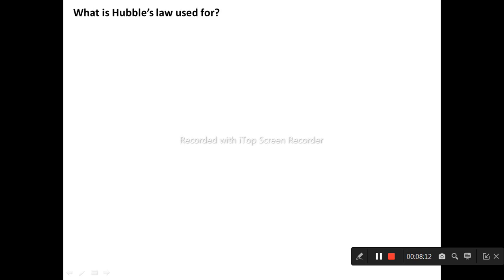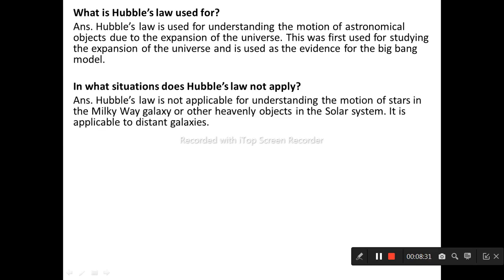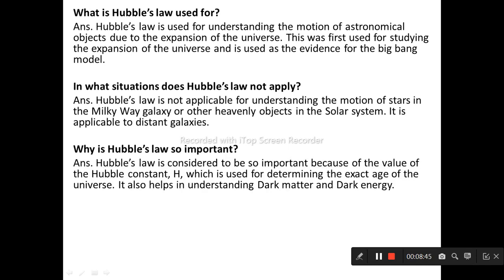Hubble's law is used for understanding the motion of astronomical objects due to the expansion of the universe. This was first used for studying the expansion of the universe and is used as evidence for the Big Bang model. Hubble's law is not applicable for understanding the motion of stars in the Milky Way galaxy or other heavenly bodies in the solar system. It is applicable to distant galaxies.